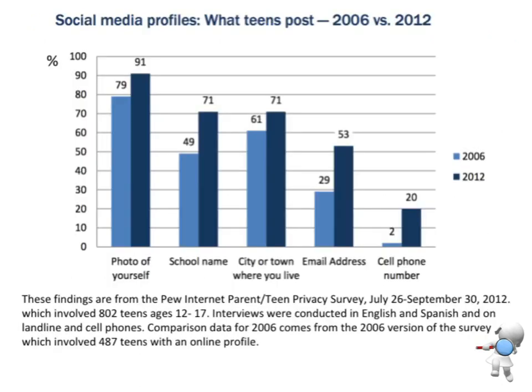Then they've given us a graph and we've been told that we've got two surveys, a 2006 and a 2012. In 2012 we had 802 teenagers involved between the ages of 12 and 17, done in English and Spanish on landline and cell phones. In 2006 we have 487 teenagers. That's all the information there that might be useful.